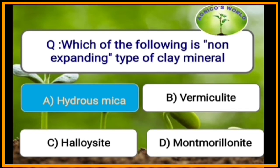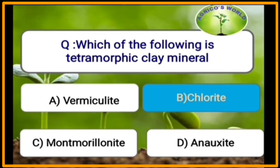Which of the following is a non-expanding type of clay mineral? Among hydrous mica, vermiculite, halloysite, and montmorillonite, hydrous mica is the non-expanding type. Which of the following is a tetramorphic clay mineral? Chlorite is a tetramorphic clay mineral.